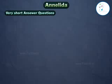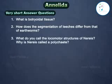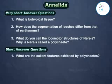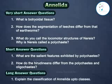Very short answer questions: What is botryoidal tissue? How does the segmentation of leeches differ from that of earthworms? What do you call the locomotor structure of Nereis? Why is Nereis called a polychaete? Short answer questions: What are the salient features exhibited by polychaetes? How do the Hirudineans differ from polychaetes and oligochaetes? Long answer questions: Explain the classification of Annelida up to classes.